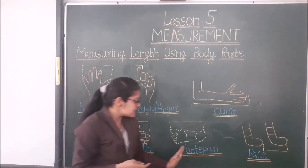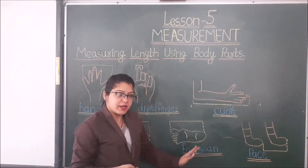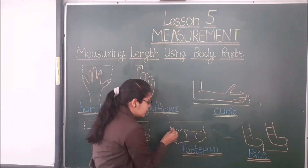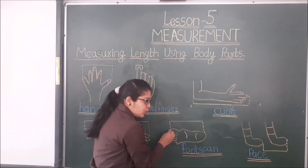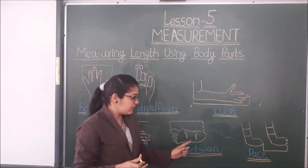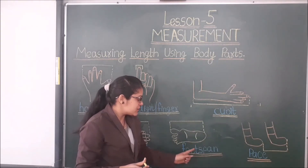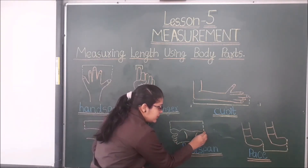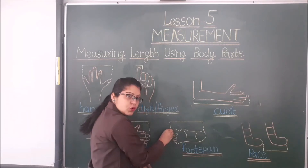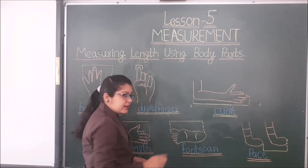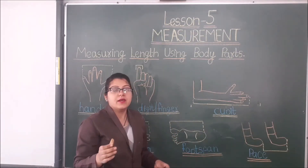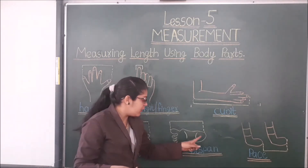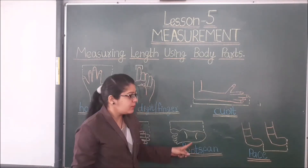The next is foot span. Foot span means from heel to the toe. We can measure the length of anything with the help of foot span — like the length of a room.